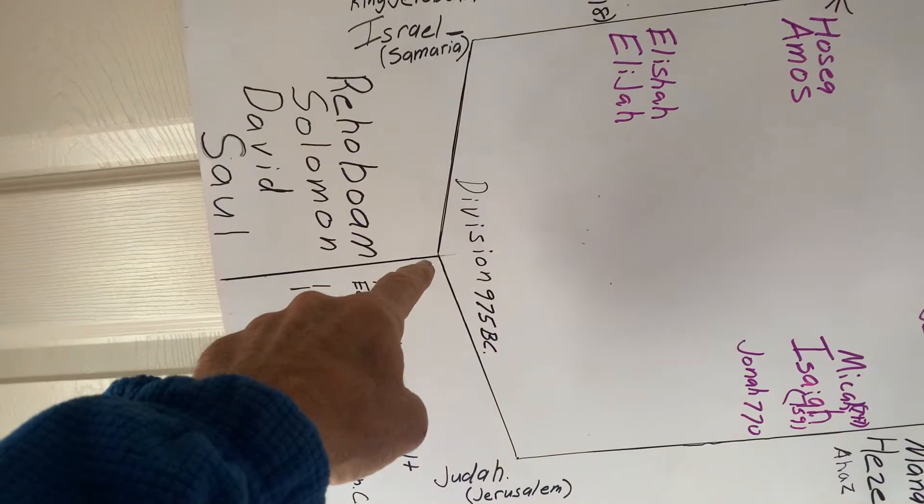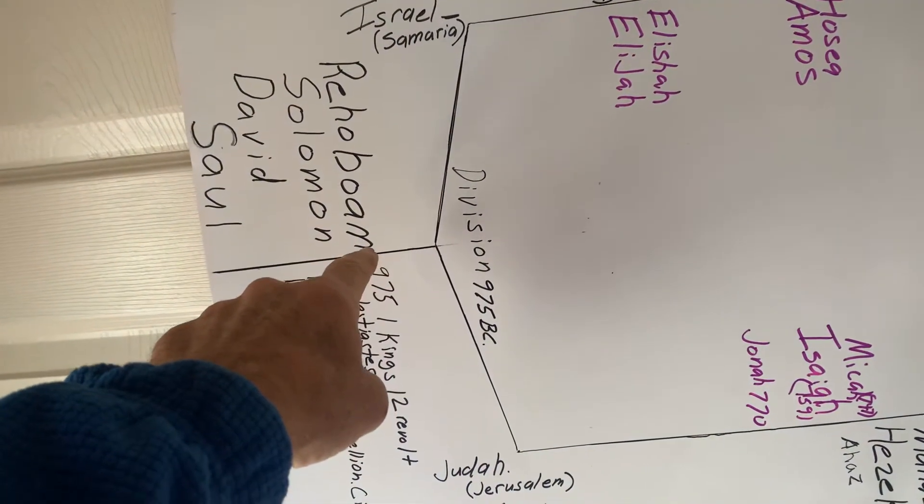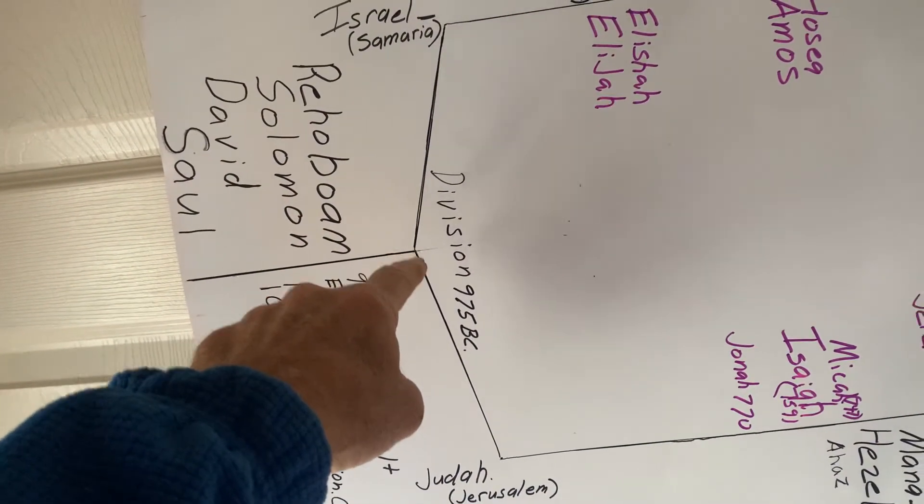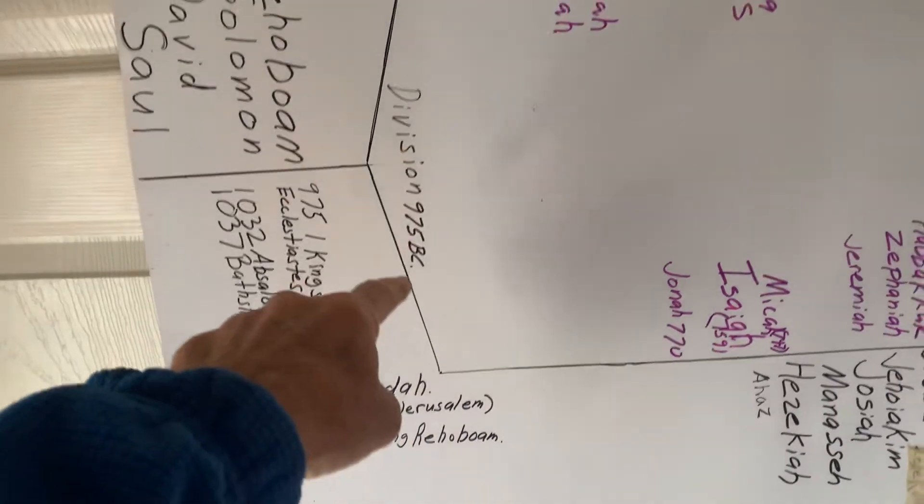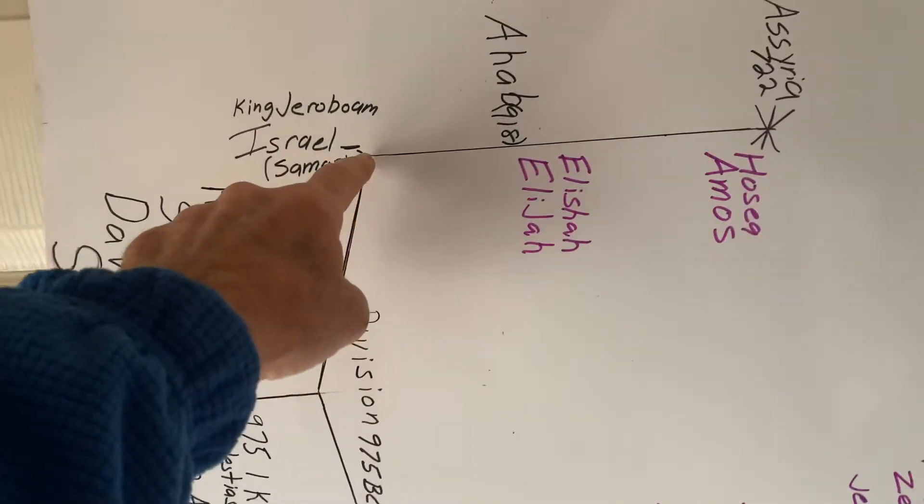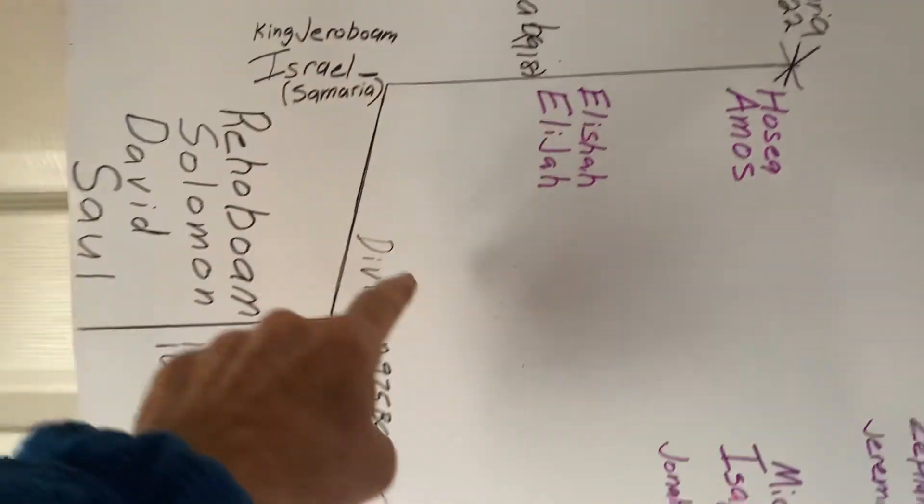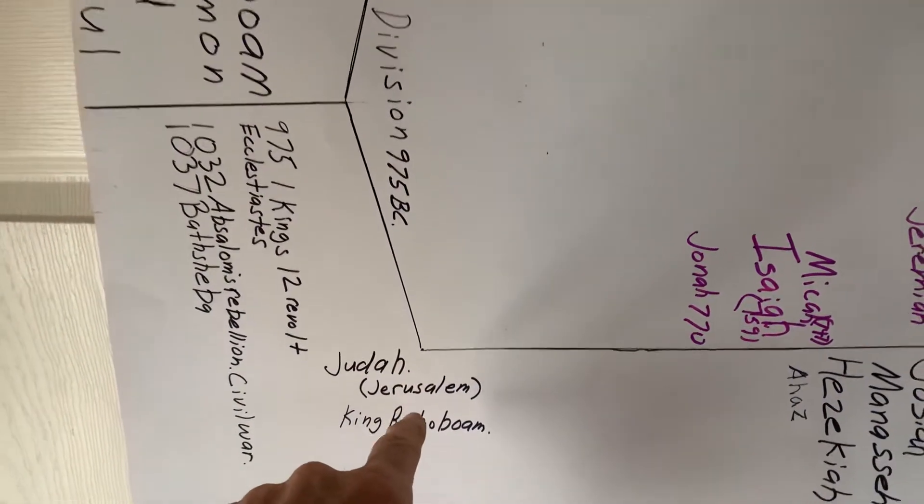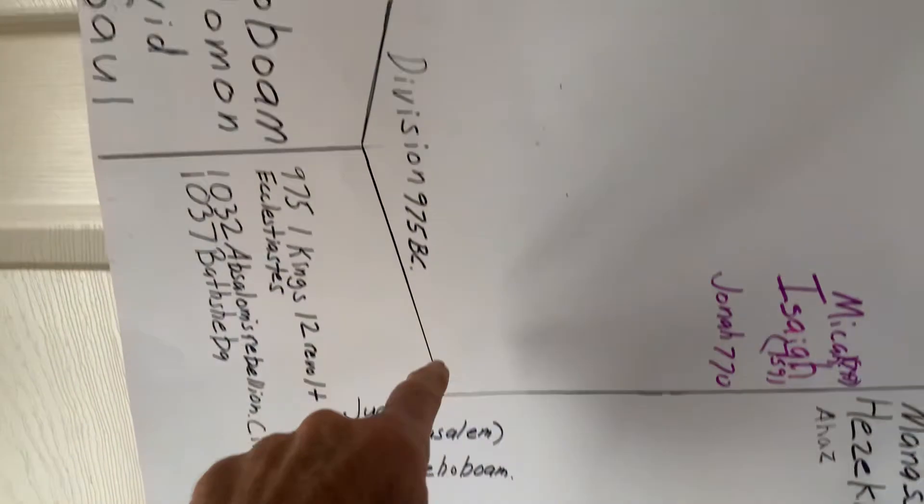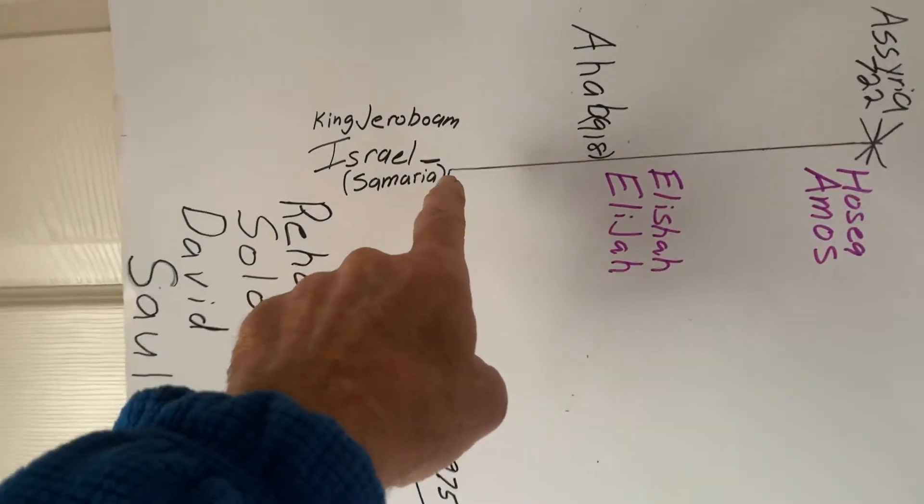In the life of Rehoboam, Solomon's son, there is a division that takes place where you have two separate kingdoms. To the north is Israel, the capital is Samaria. To the south is Judah, and the capital is Jerusalem.